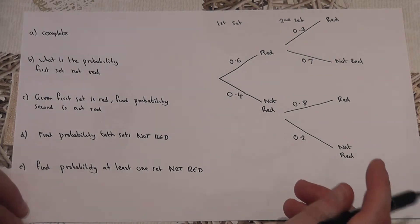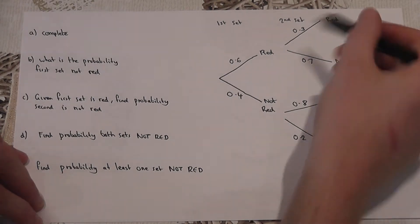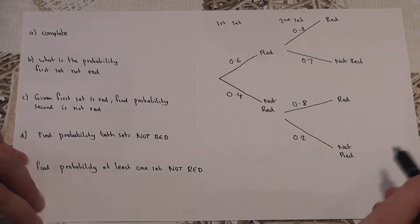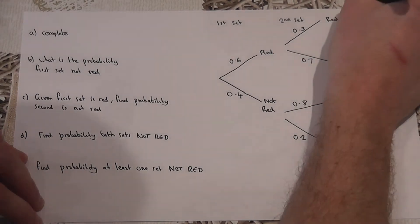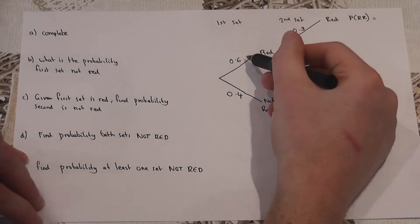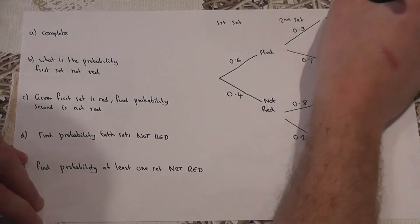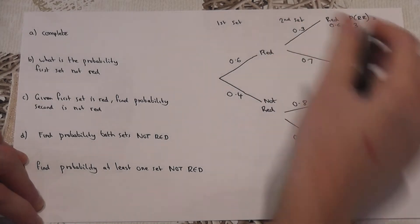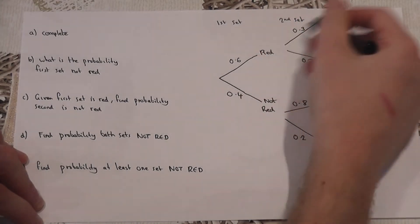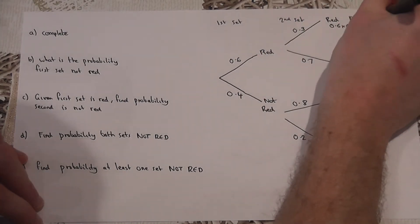What I then also do, by preference, is I calculate the probabilities of each of the events happening. So the probability of red and then red is 0.6 times 0.3. We multiply the decimals down the tree diagram. That is 0.18.